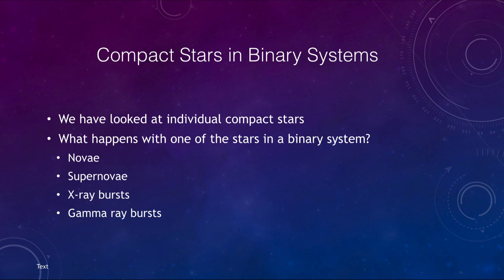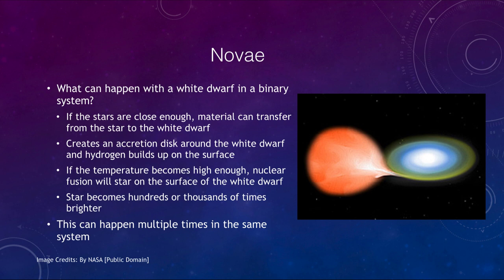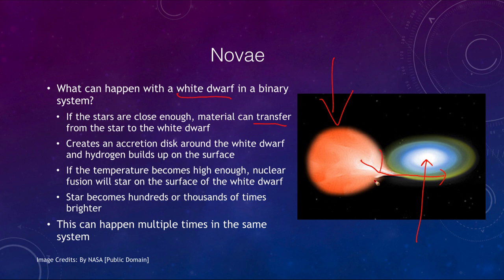First, let's look at novae. What is a nova? If we have a white dwarf star in a binary system, they may be close enough that material can transfer. You have the regular star on one side and the white dwarf star at the center, and material is being transferred from one to the other. If they are close enough together, material can be pulled off the ordinary star into an accretion disk around the white dwarf, and as that material spirals in, it builds up on the surface.